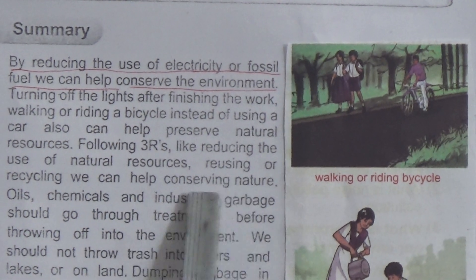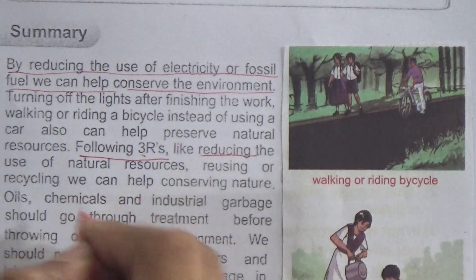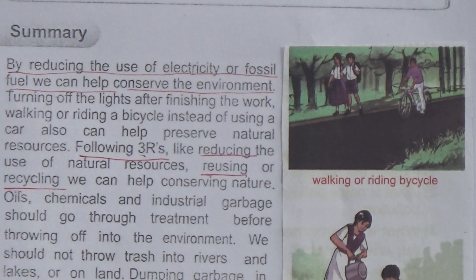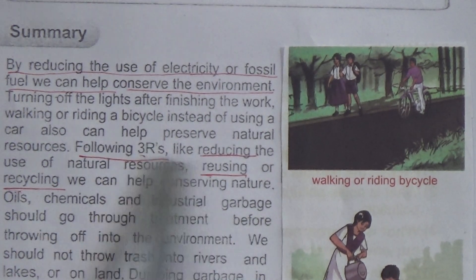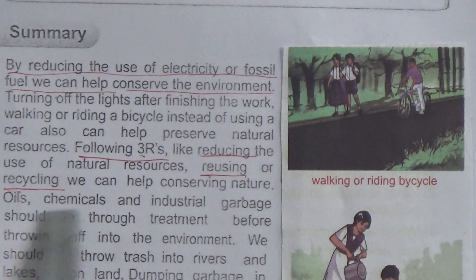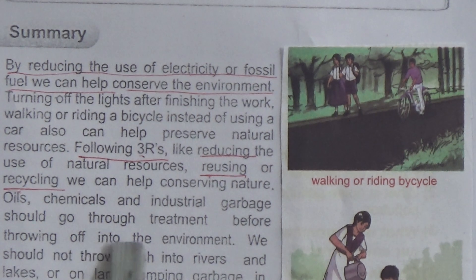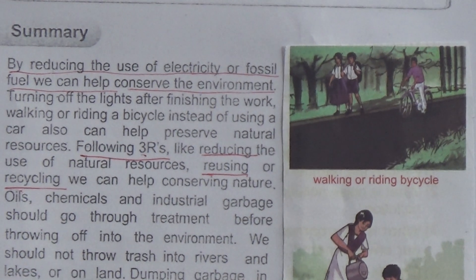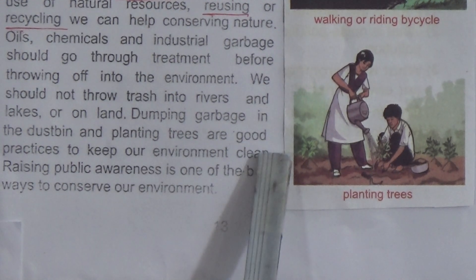Following the three R's — reducing the use of natural resources, reusing, and recycling — we can help conserve nature. These three words starting with R are very important. Oil, chemicals, and industrial garbage should go through treatment before being thrown into the environment. We should not throw trash into rivers, lakes, or on land. Dumping garbage in dustbins and planting trees are good practices to keep our environment clean.